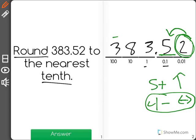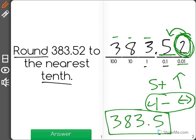Now as you can see, I didn't touch these numbers over here at all, meaning that they stay the same. 383.5. And any number that we circle becomes a 0. Since it's in the hundredths place, we don't need to write it. Our correct answer is 383.5.